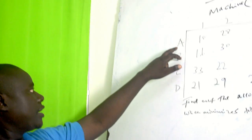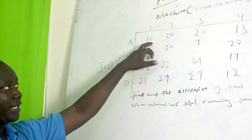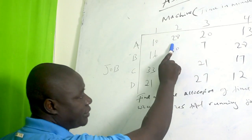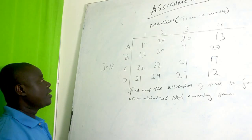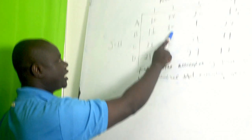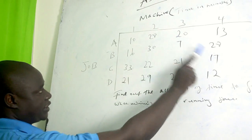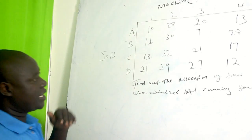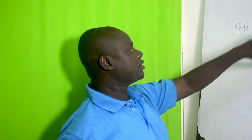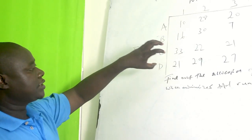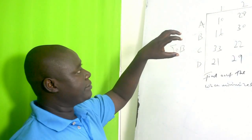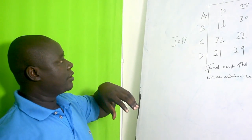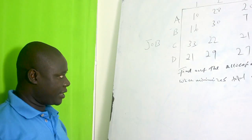If you have job A in machine 1, it can run 10 minutes. In machine 2, 28 minutes. In machine 3, 20 minutes. In machine 4, 13 minutes. If you come to B, it can run in 16, 30, 7, and 28 minutes. The same applies to C and D. Now, these are normal times, and we are being asked to find the minimum time.